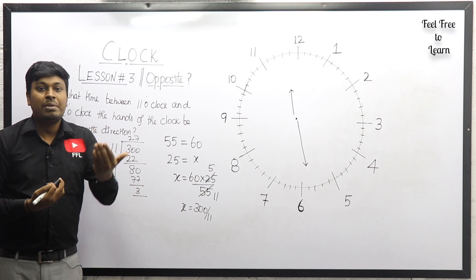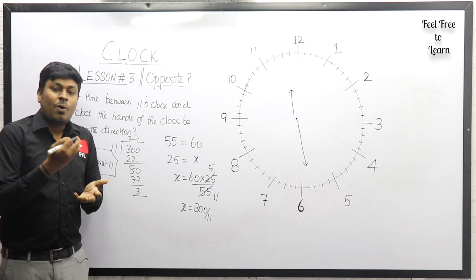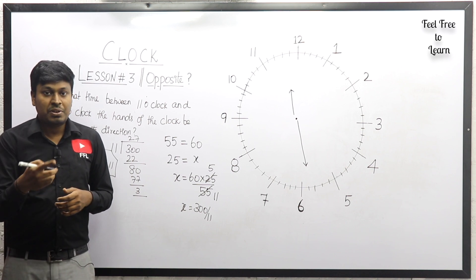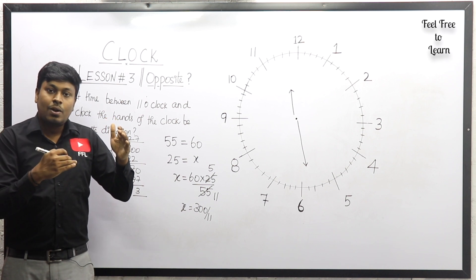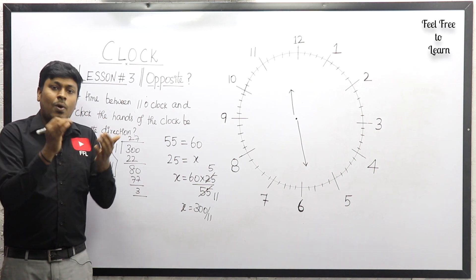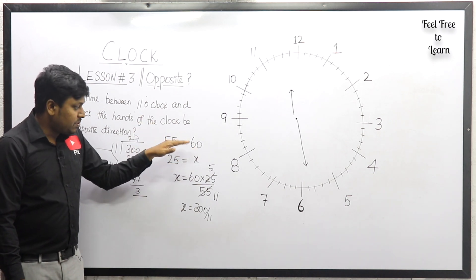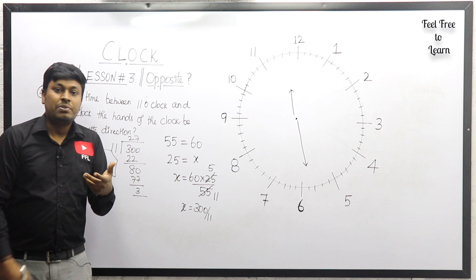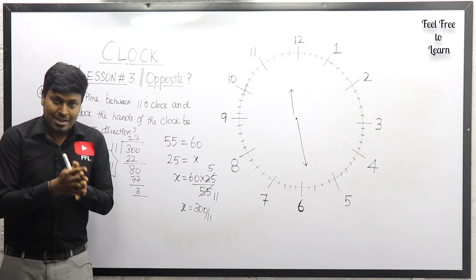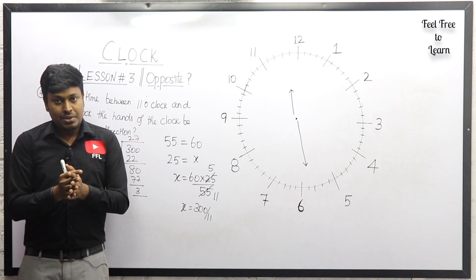That's it — a very easy lesson because you learned the logic in the previous lesson. If you learn the logic properly, solving all clock questions is very simple. The next lesson will cover both hands at exactly a right angle, 90 degrees, solved by the same method. Thank you for watching. If you liked it, share it with friends preparing for competitive exams.